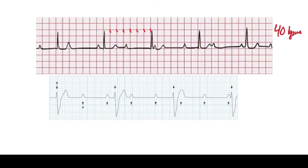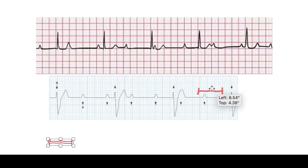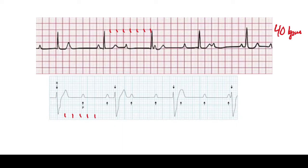In contrast, the bottom rhythm strip shows a wide complex rhythm. The P waves are again beating at their own rate with no association to the QRS complexes. The QRS complexes are beating much more slowly — around 30 beats per minute — which falls in the 20 to 40 bpm ventricular range. Combined with the wide complex, this confirms a ventricular escape rhythm as the dominant rate.